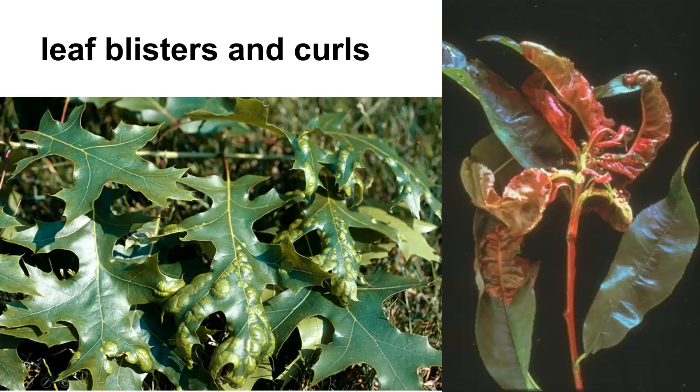This shows you leaf blisters and curls. You can see how we get leaf blisters and curls. The one on the left hand side is what we call oak leaf blister. The one on the right hand side is peach leaf curl. You can see how we get these — the one on the left looks like we've got blisters, the one on the right looks like we've got curl going on.